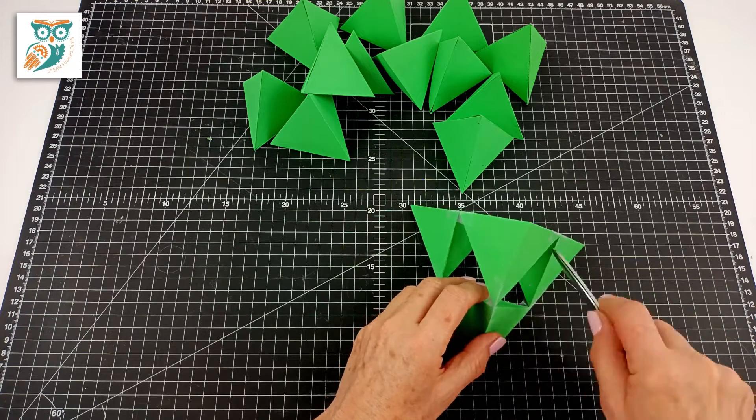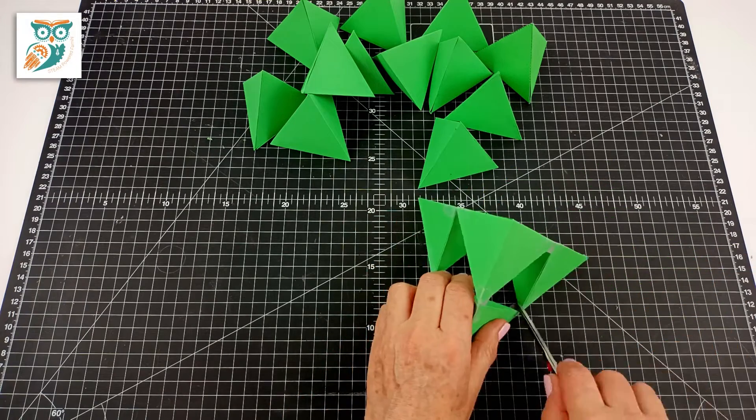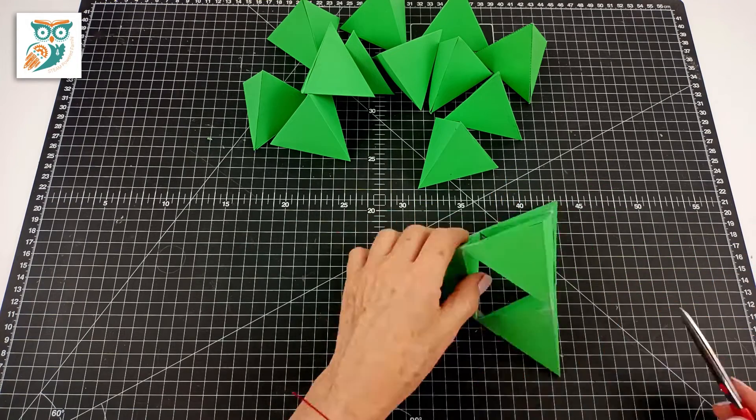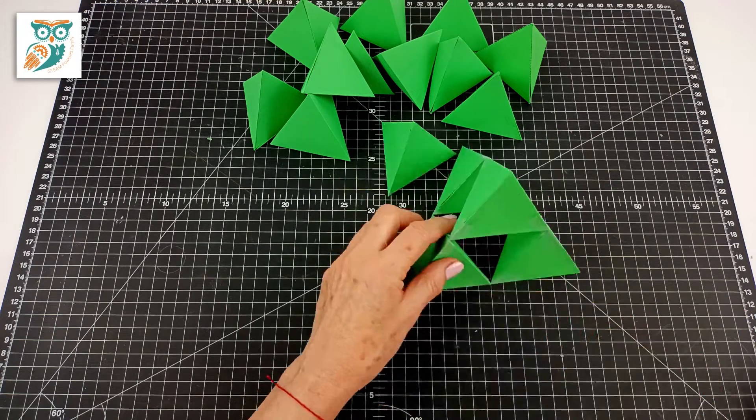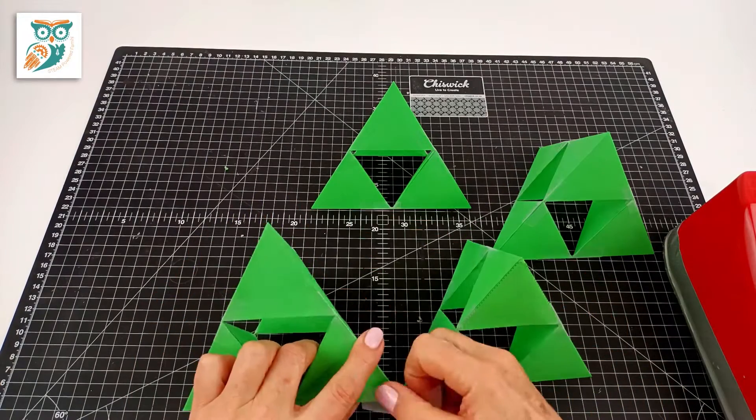And then we're just going and cleaning up the tape a little bit here just so it looks nicer. And we're just trimming the tape and tucking it in. And then you're going to repeat this. So we're going to go and do it again and we're going to make four more of them.